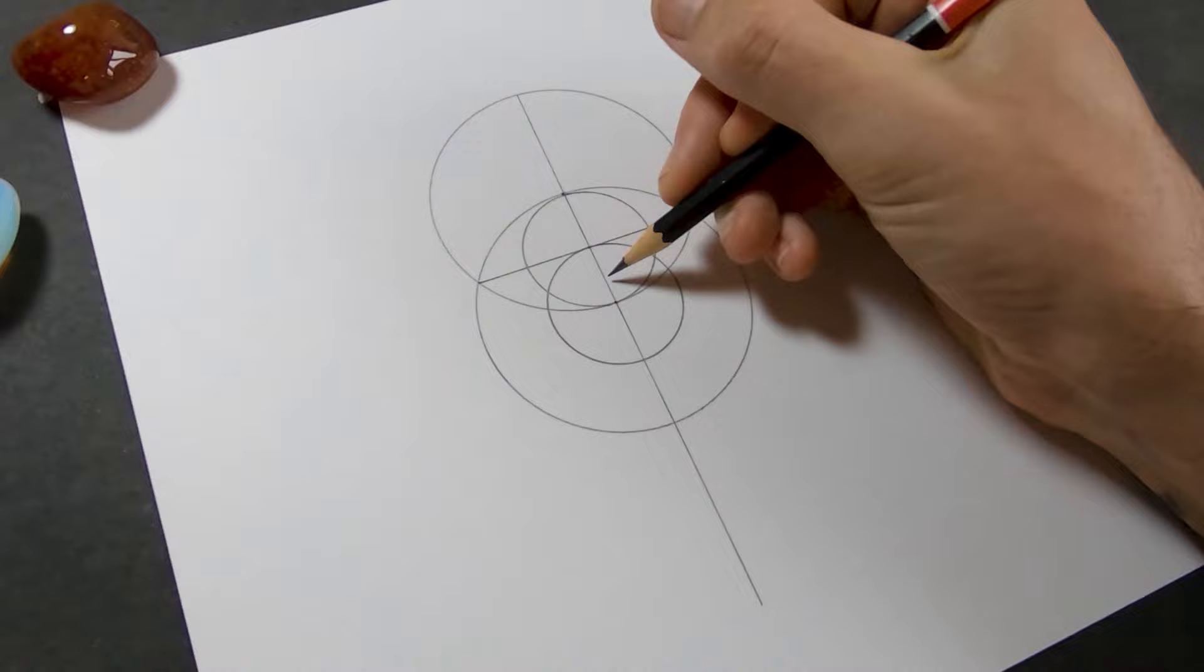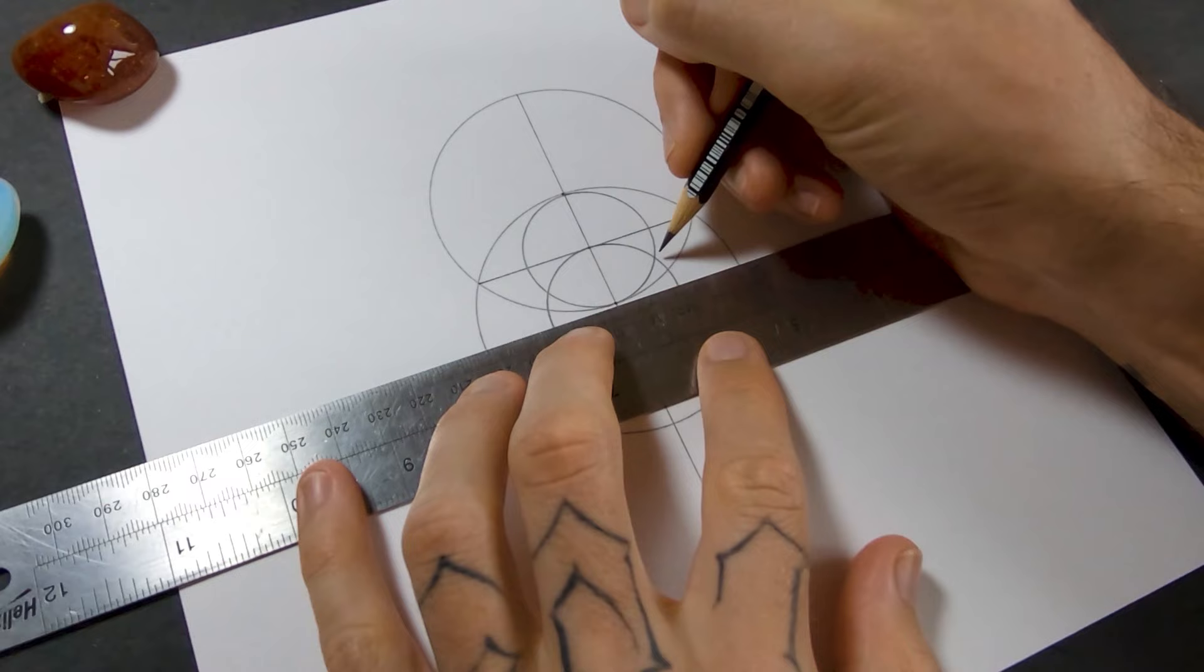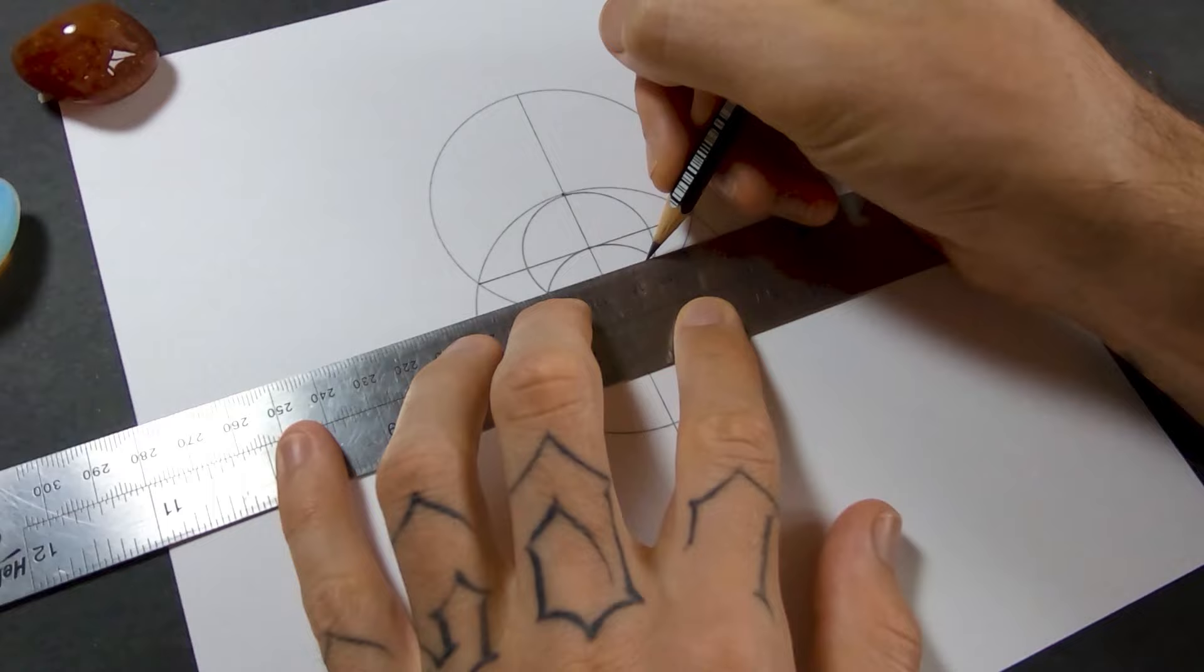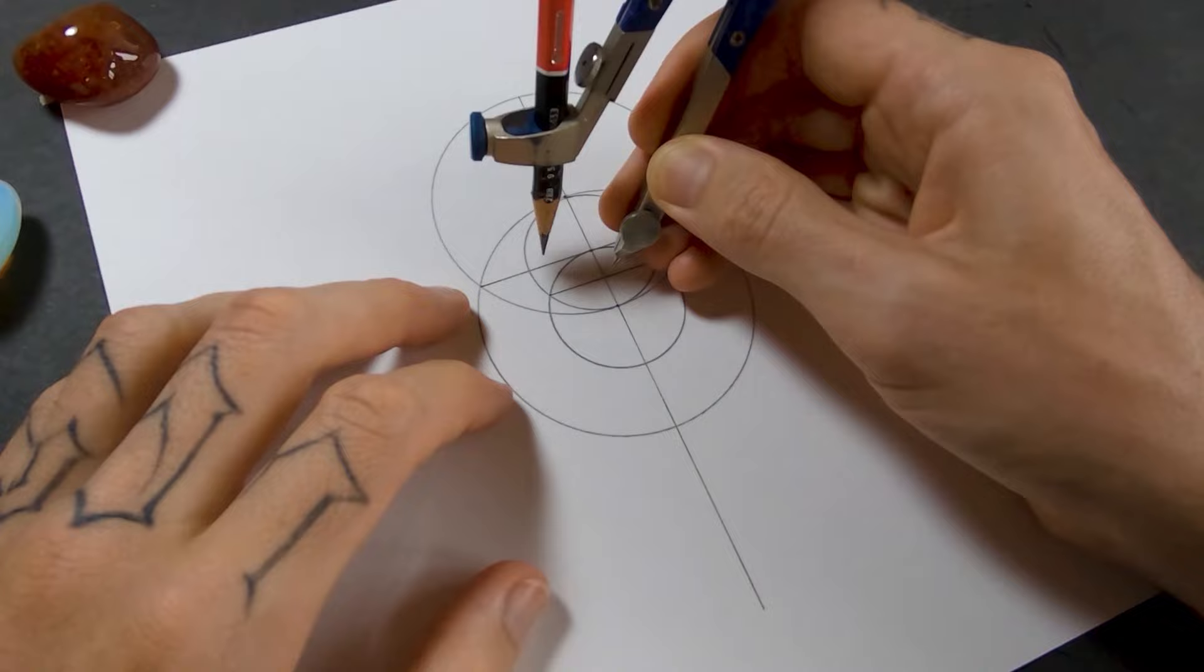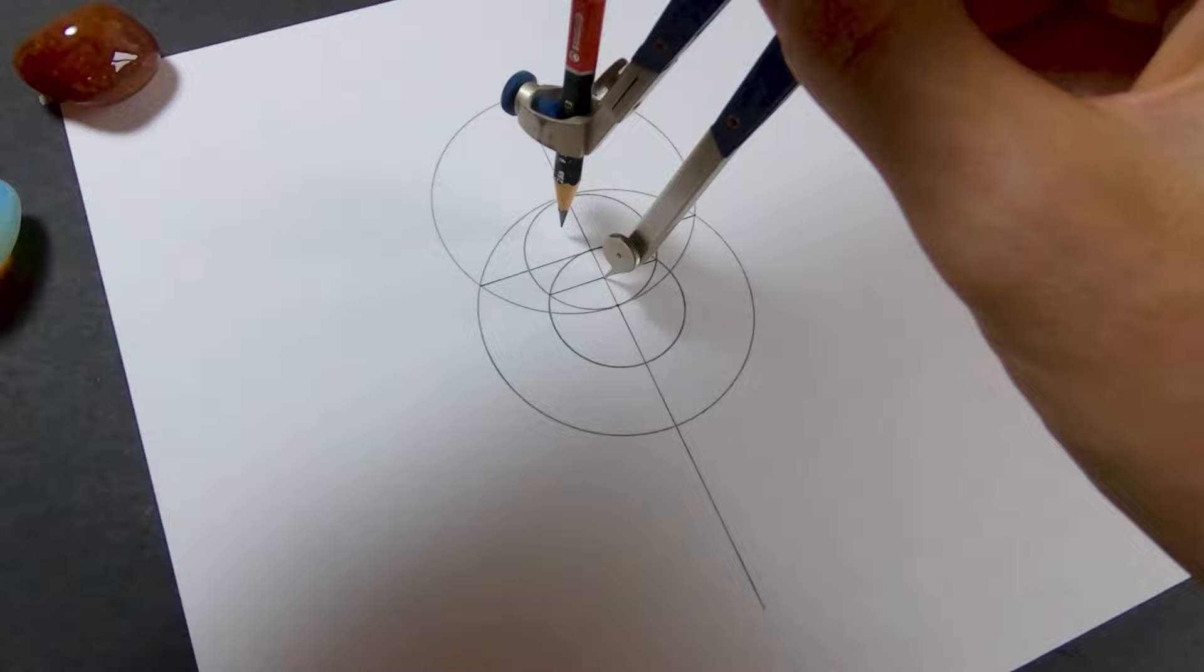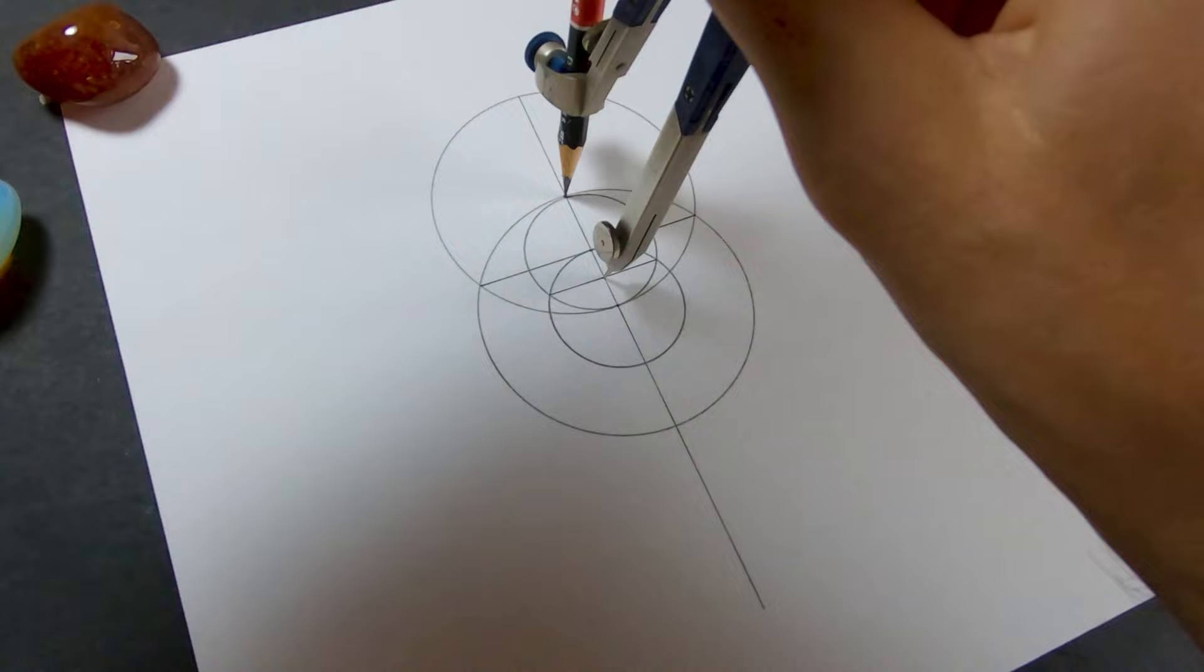If I just connect these two points together. So this is for the crescent moon. I'm going to put my compass point in that little cross section that I've just made. I'll set my compass to the outside of those two little circles and draw another circle around them.